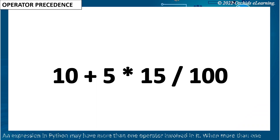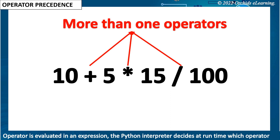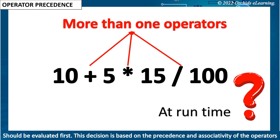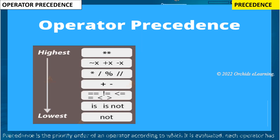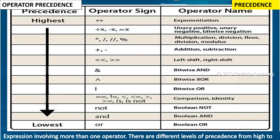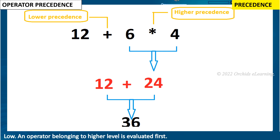An expression in Python may have more than one operator involved in it. When more than one operator is evaluated in an expression, the Python interpreter decides at runtime which operator should be evaluated first. This decision is based on the precedence and associativity of the operators. Precedence is the priority order of an operator according to which it is evaluated. Each operator has a precedence associated with it, used to determine the order of evaluation of an expression involving more than one operator. There are different levels of precedence from high to low.